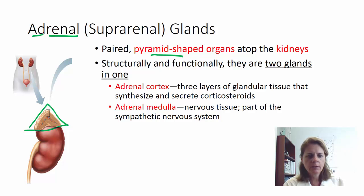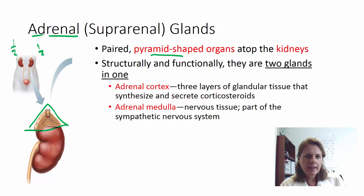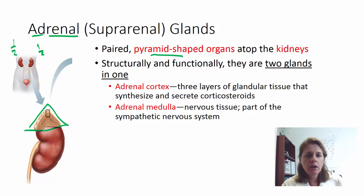The adrenal glands are actually two glands in one — you have two glands on the left and two on the right. When you look at these glands they have an outside and an inside. Similar to how the brain has a cerebral cortex and a cerebral medulla, whenever you talk about the outside you say cortex and inside you say medulla.